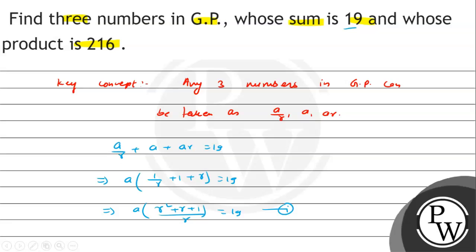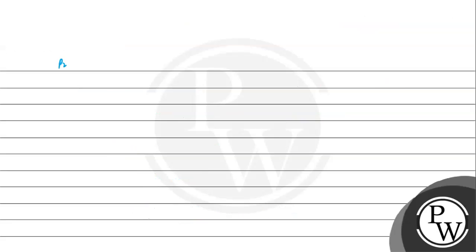The other thing, if we go ahead and find out that product is 216. The product means A by R multiplied by A multiplied by A R equals 216. R and R cancel out. A cubed is 216, which is 6 cubed. So A equals 6.